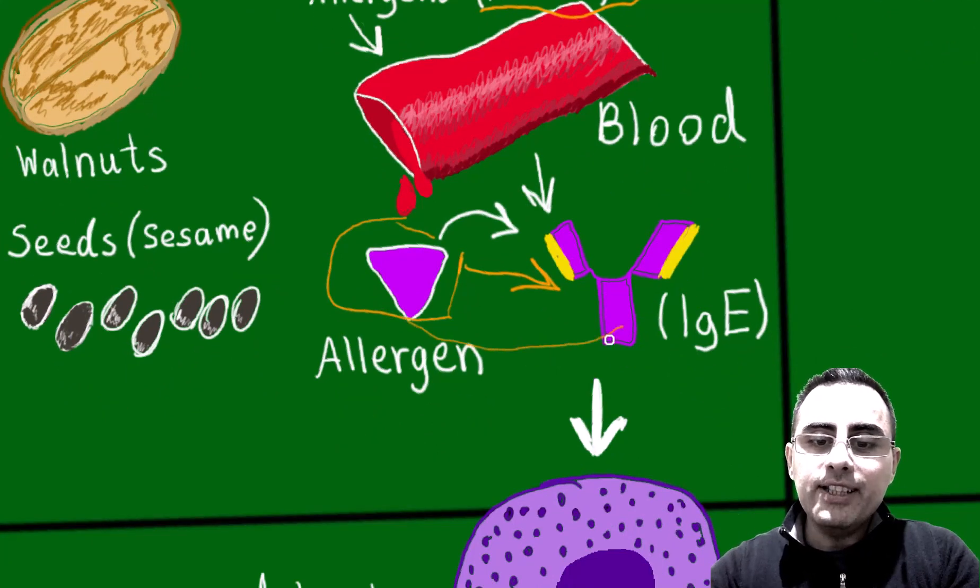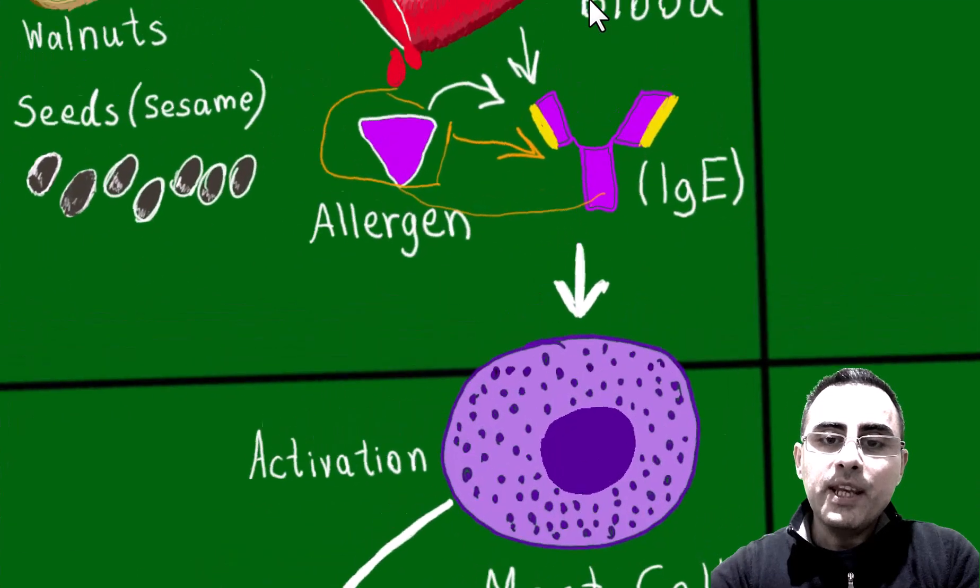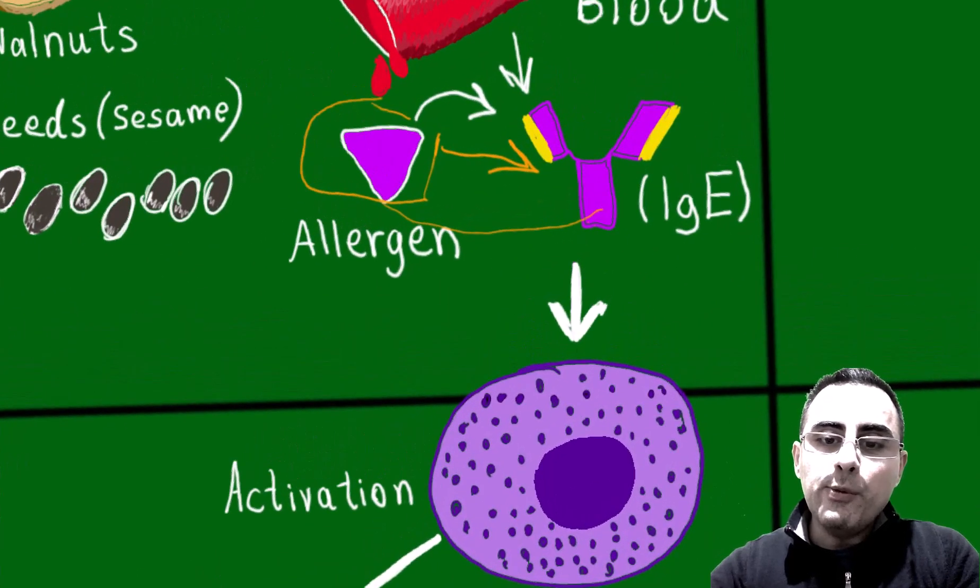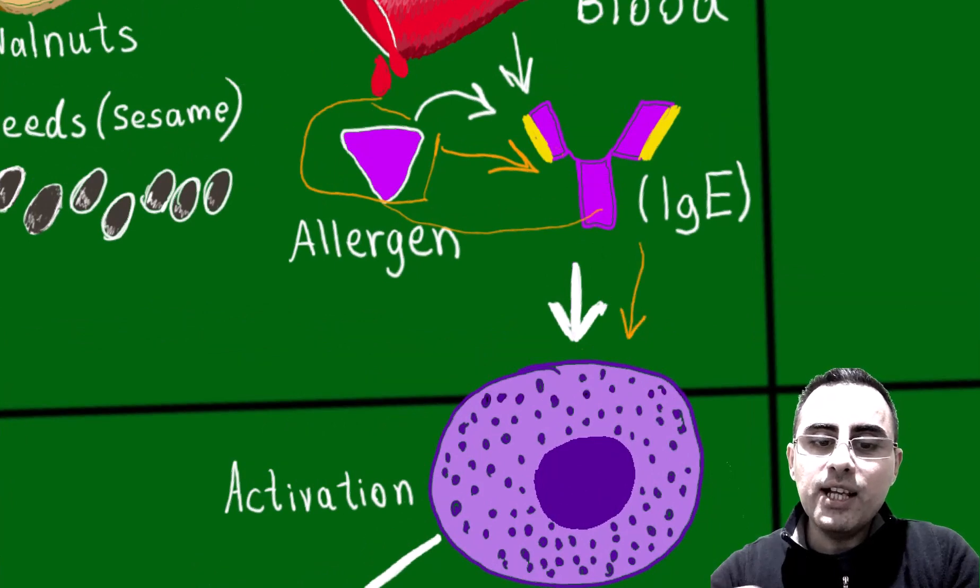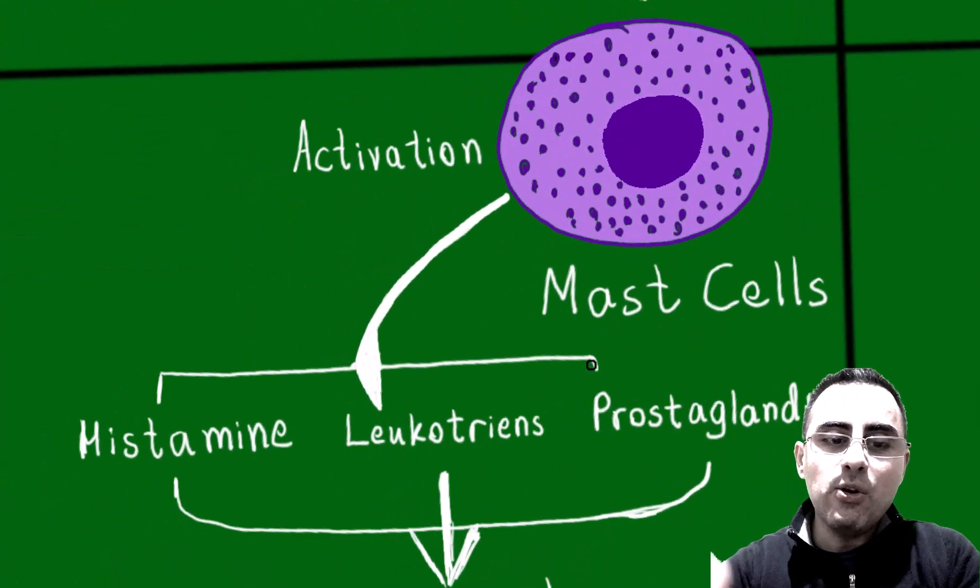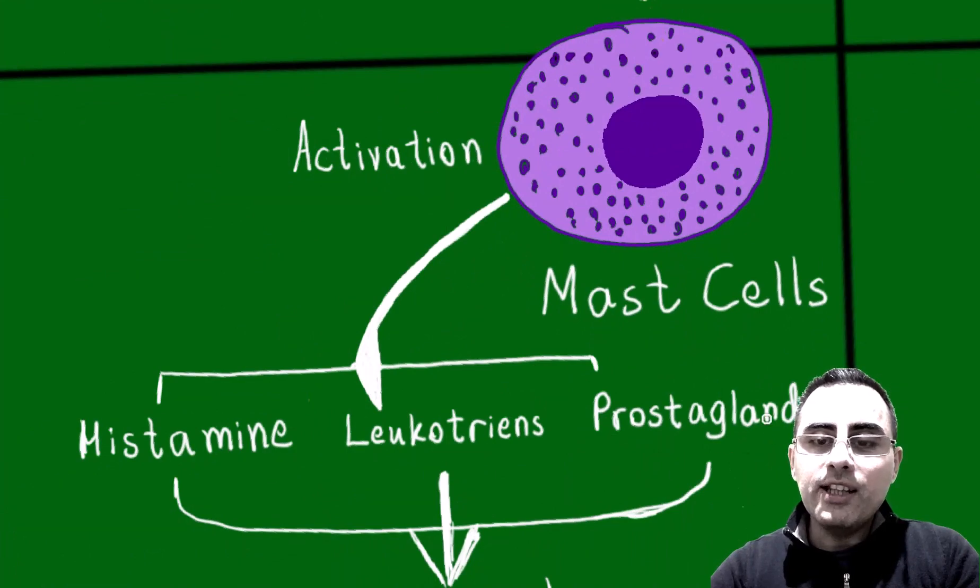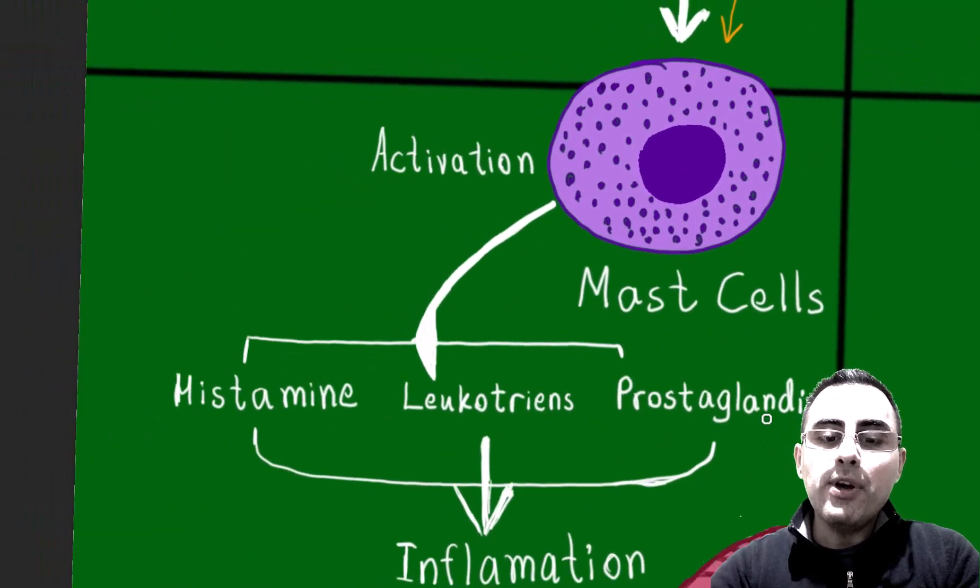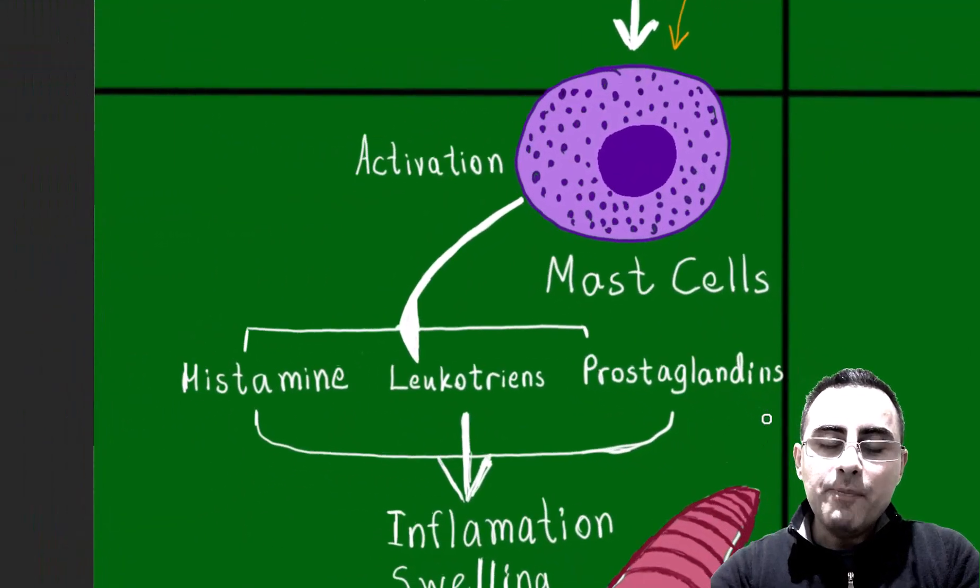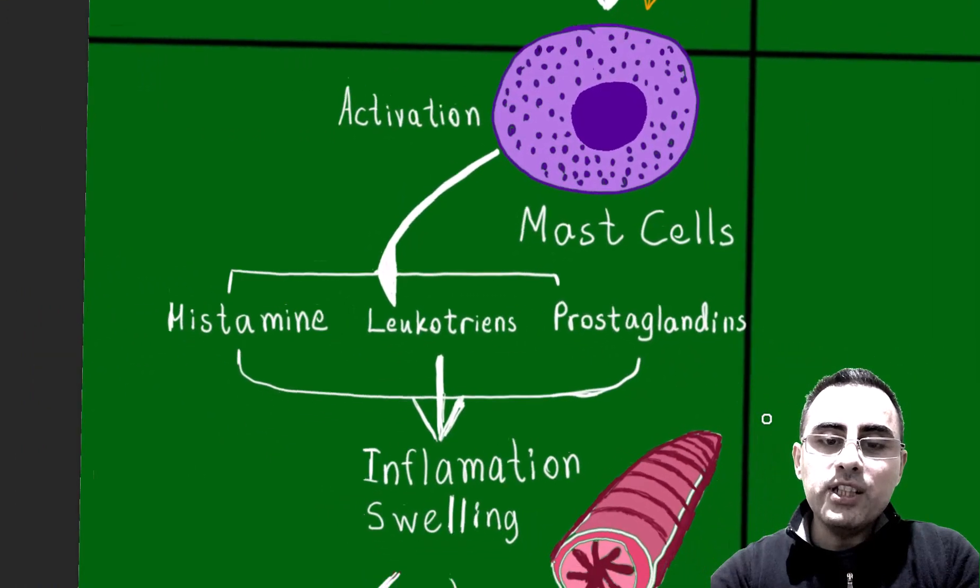This complex is detected by mast cells. When this complex binds to mast cells, it causes mast cell activation. Mast cell activation causes release of histamine, leukotrienes, prostaglandins, which are pro-inflammatory cytokines, so it causes inflammation.